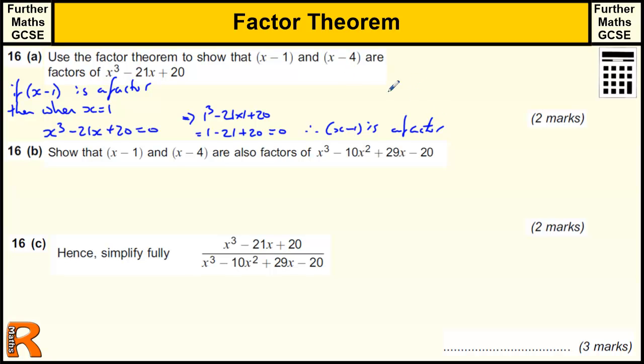Okay, I'm going to write that again. So for x minus 4, well, x equals 4, 4 cubed minus 21 times 4 plus 20. We need 4 cubed, which is 64, minus 21 times 4, which is 84, plus 20, which equals 0. Therefore, x minus 4 is a factor.